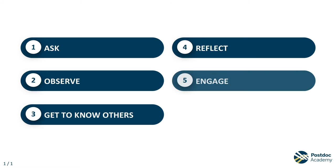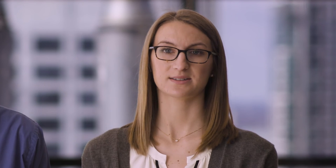Next, engage. Engage with other members of the group right from the beginning. Get used to their patterns of operation. What does collaboration look like? Being engaged is being present, asking questions, being curious, learning about and being interested in other people's projects, reading the literature about your new field. Being part of a group is a very active process.